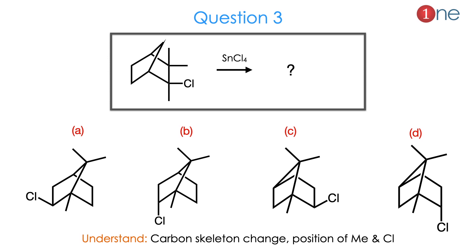Then question number 3. The starting material is a bicyclic system with a bridged carbon. At the second position two methyl groups are present, and at the first position there is a chlorine. The reagent is SnCl4 (tin tetrachloride), and you are asked to guess the product from four choices. The position of chlorine and the positions of the two methyl groups differ among the choices, so you might guess that the carbon skeleton rearranges and the positions of methyl and chlorine change.